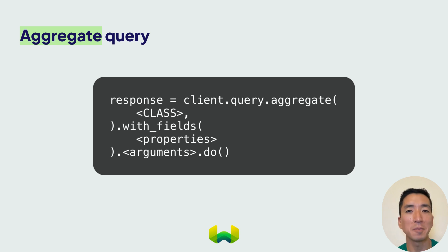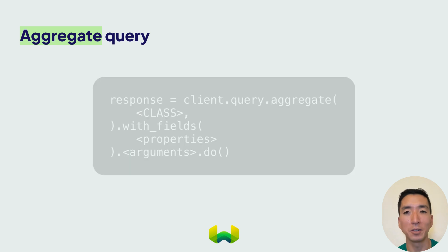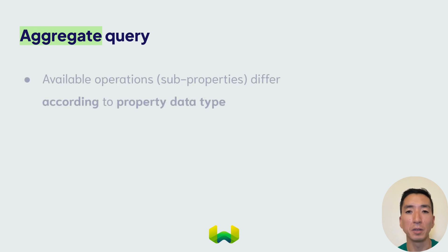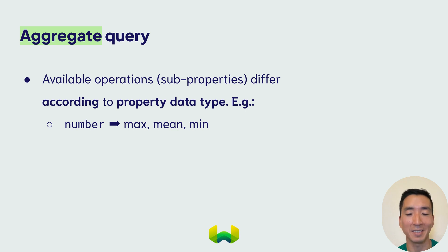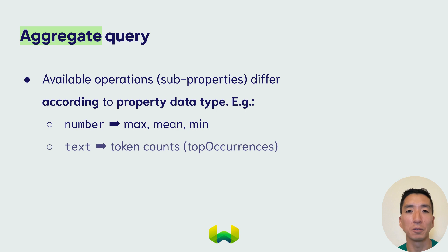As you might imagine, different operations are available to you depending on the data type of the property. While we could aggregate numbers to obtain the mean, maximum, or the minimum, we couldn't do that for texts. And similarly, operations like getting counts of tokens would only be available for texts. In other words, the available aggregations depend on the data type of the property being queried.